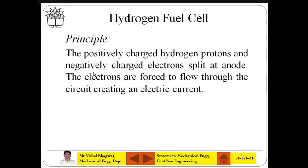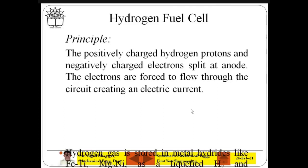So you got the principle: the positively charged hydrogen protons and negatively charged electrons are split at the anode, and the electrons are forced to flow through the circuit creating an electric current. That is the basic principle of the hydrogen fuel cell.